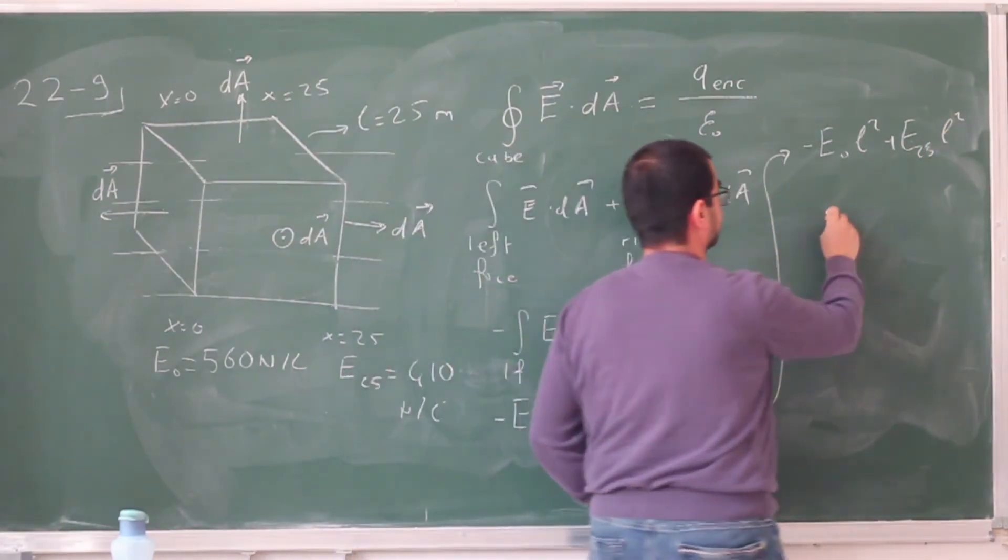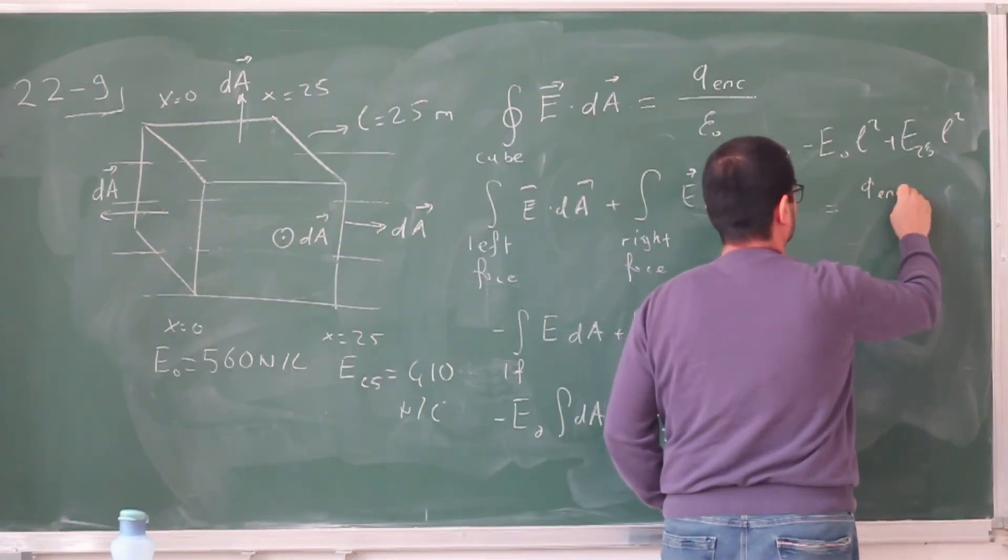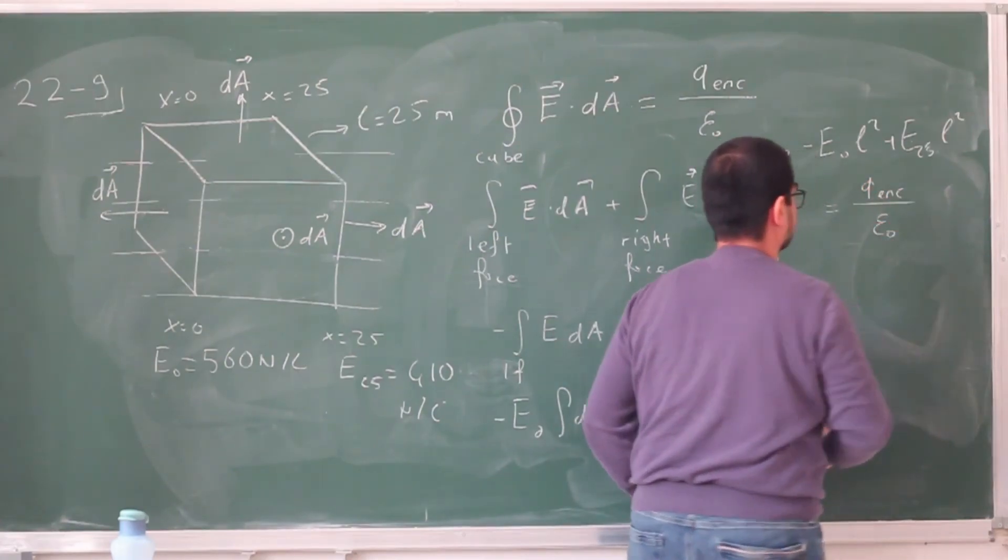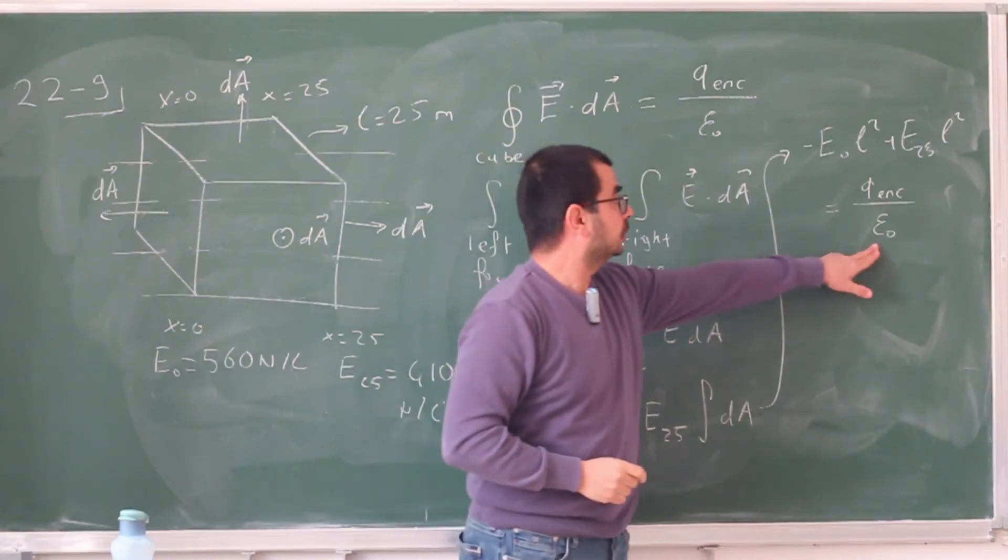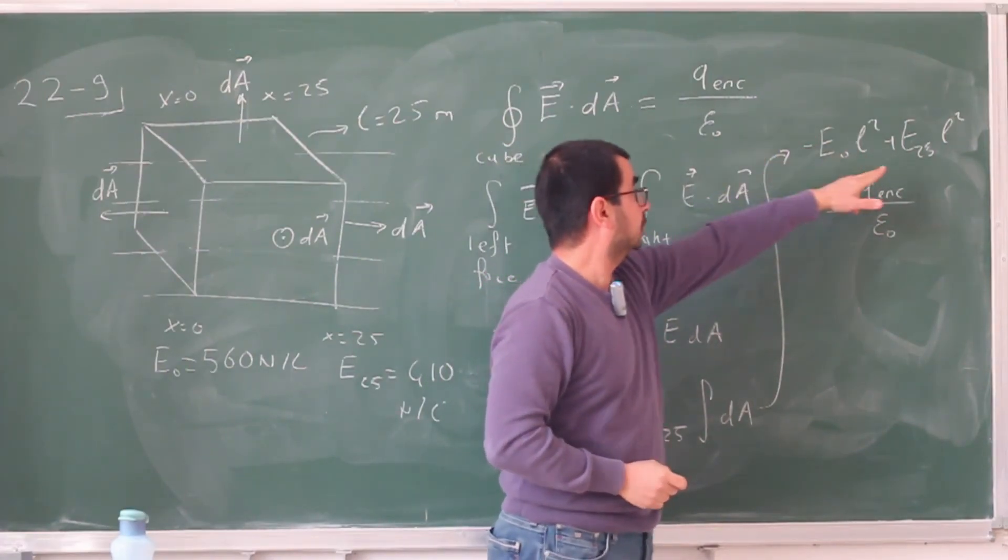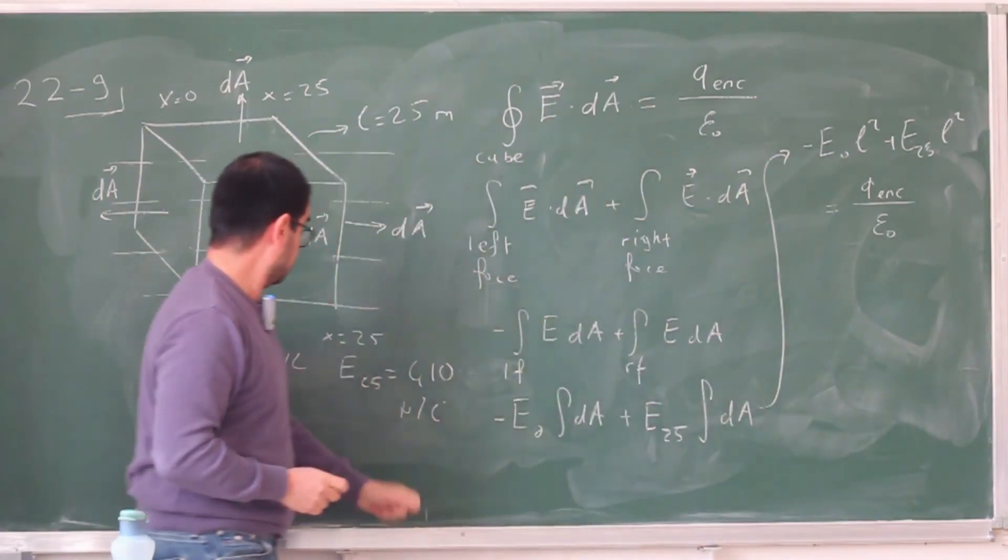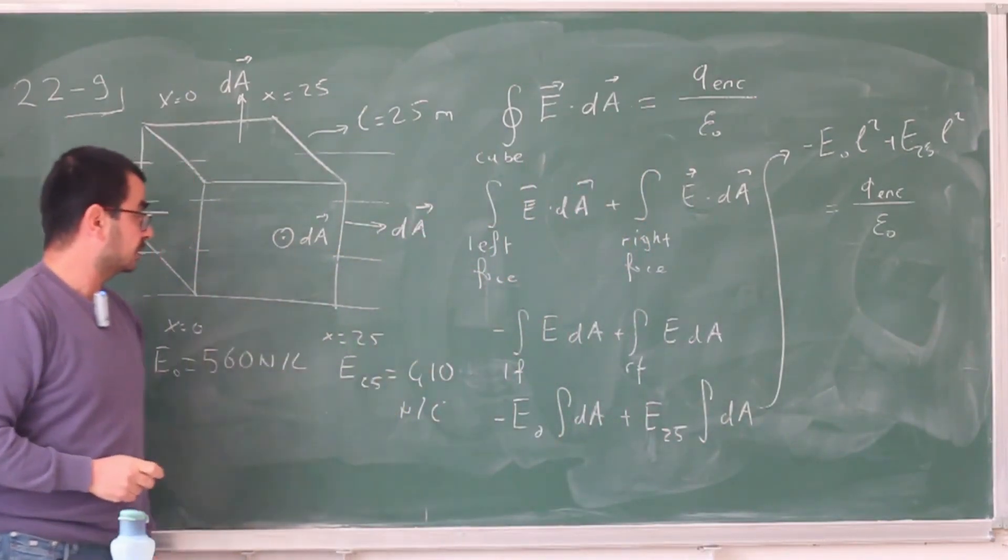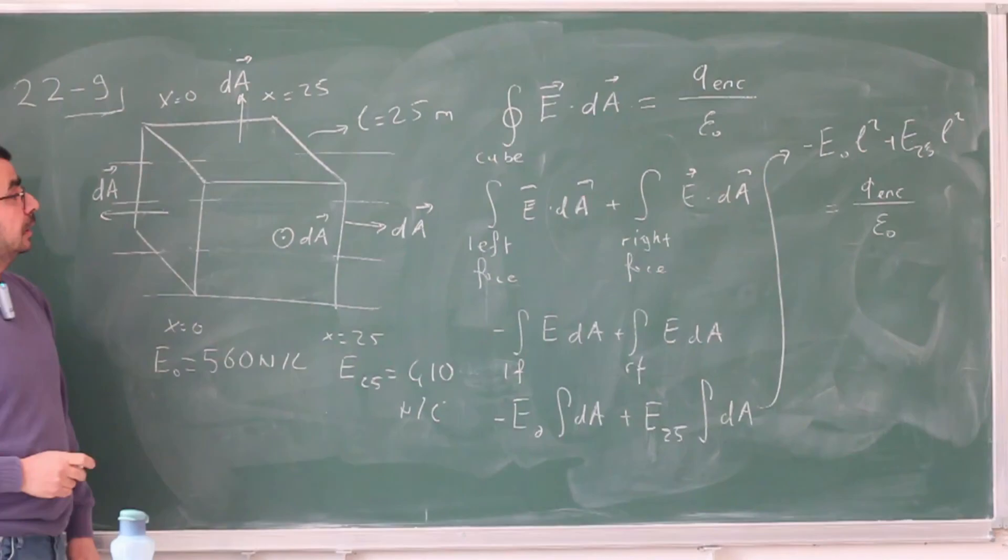So this whole thing here becomes minus E0 L squared plus E25 L squared. And this is equal to Q enclosed divided by epsilon naught. And because you can look this up, L is given to be 25. E0 is given to be something. E25 is given to be something else. So, 560 and 410 respectively. You need to carry out the algebra and find the enclosed charge.